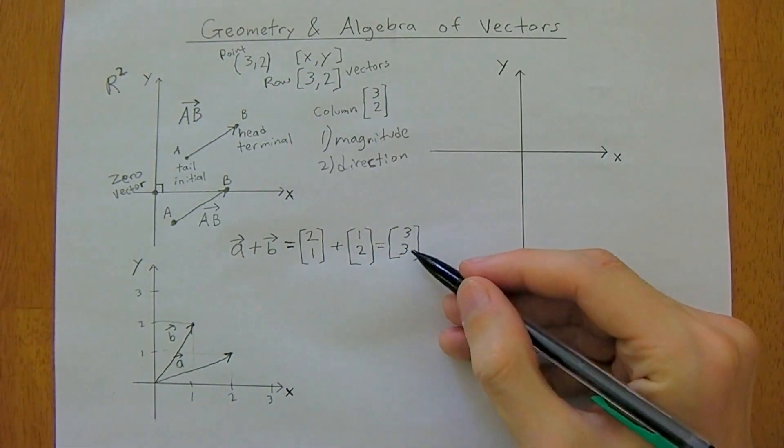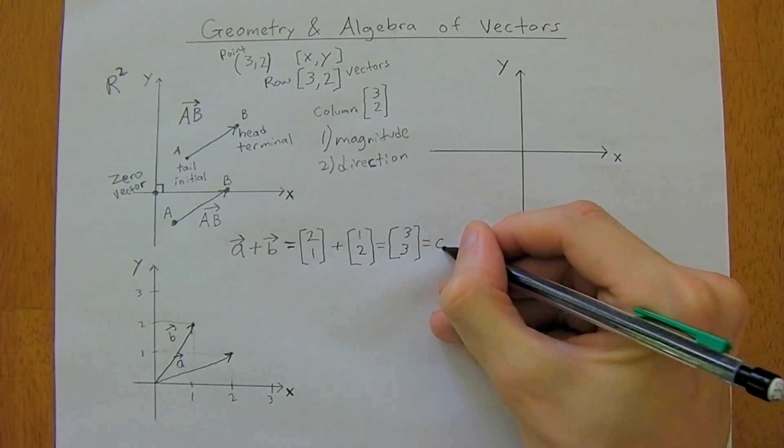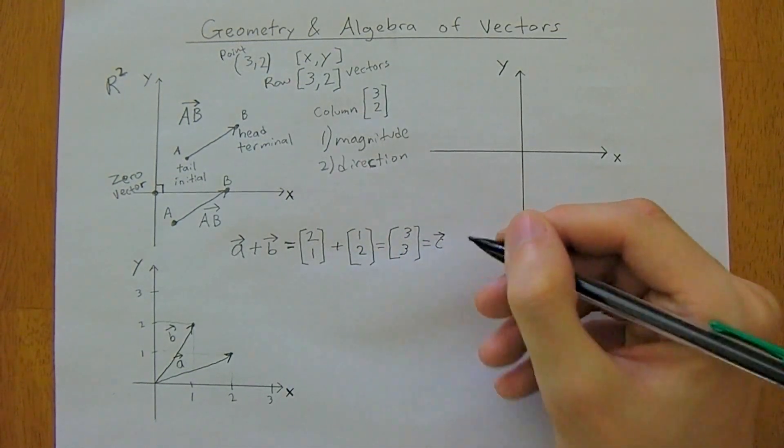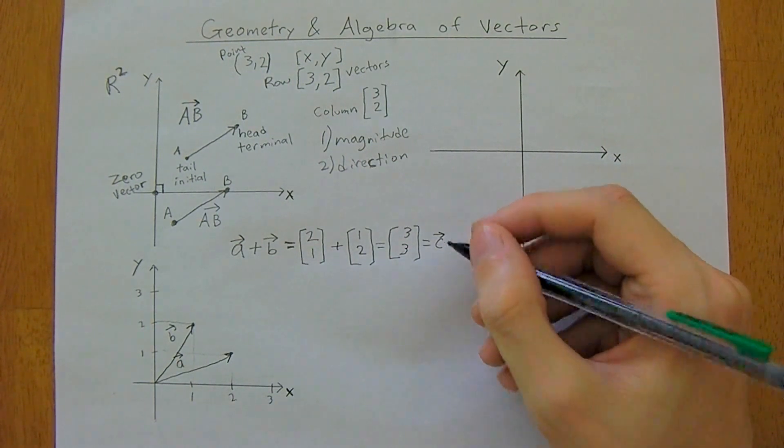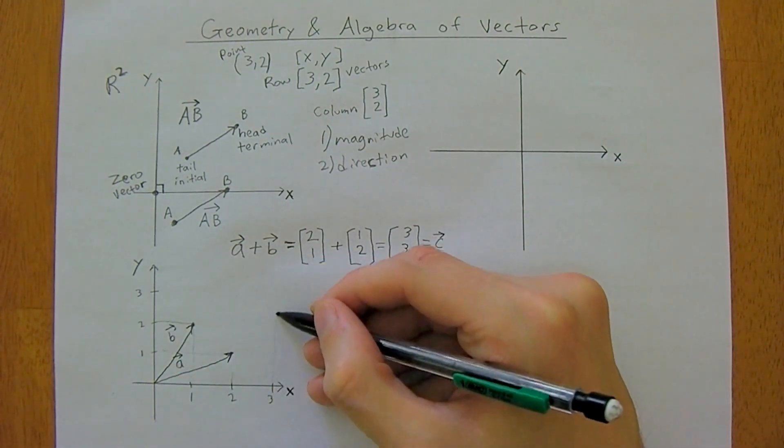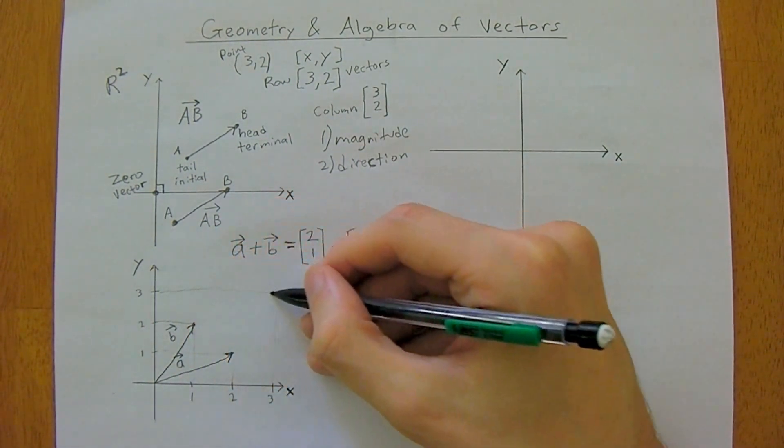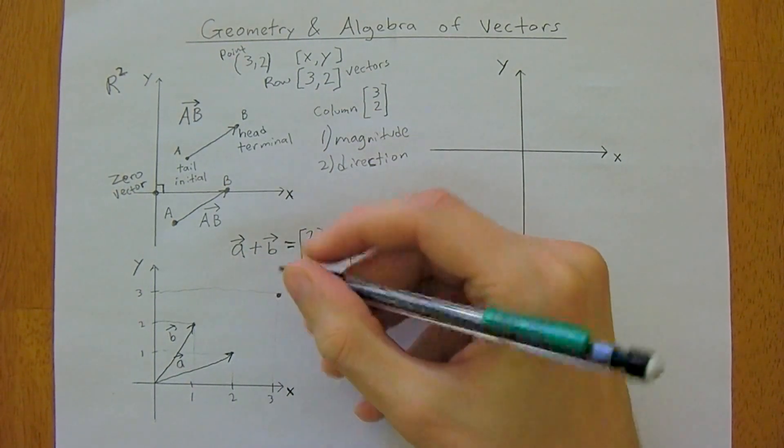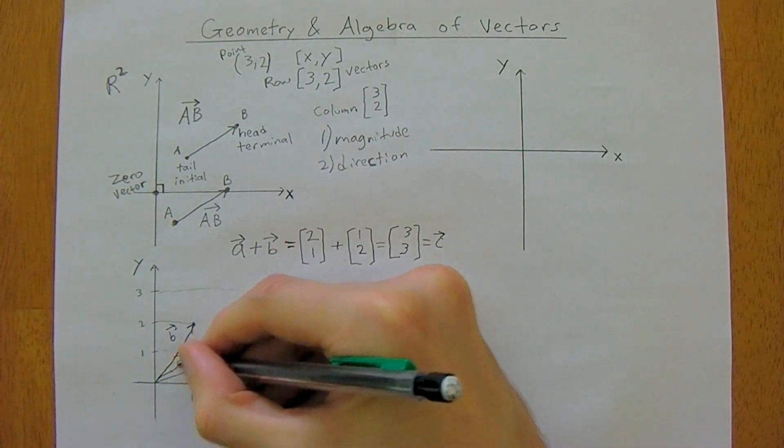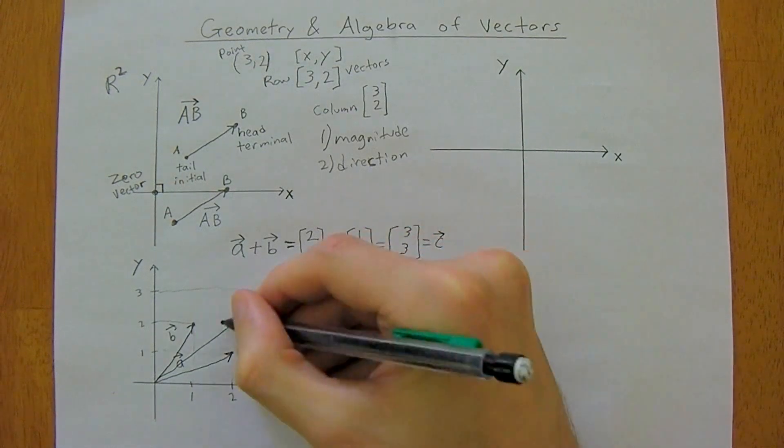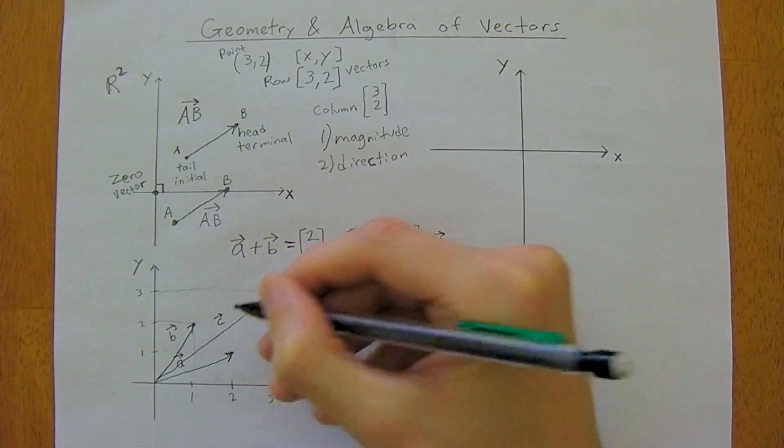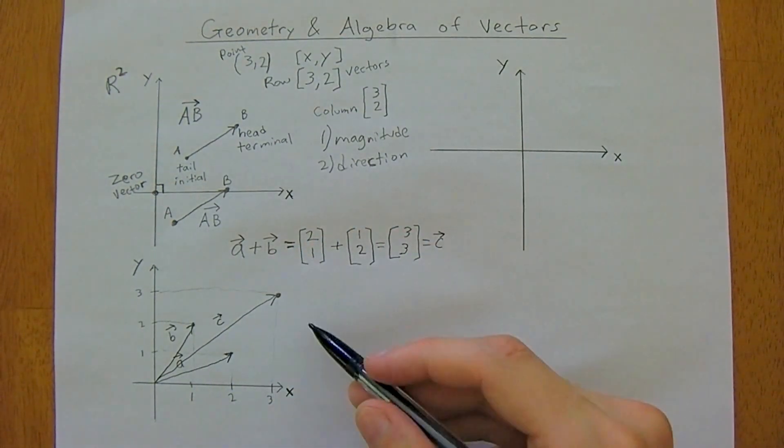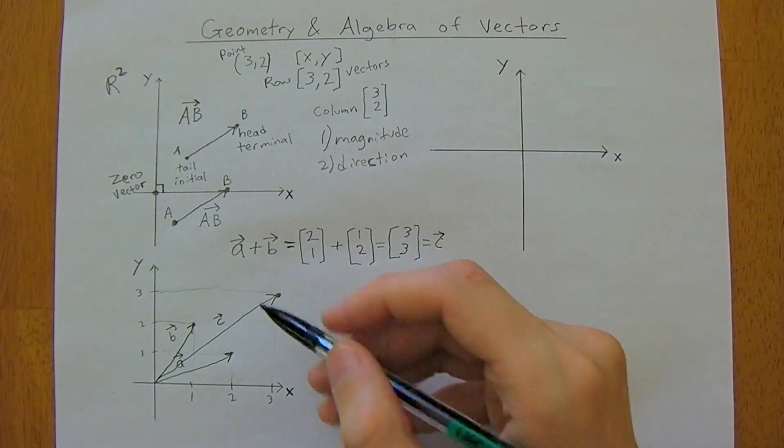So a plus b, we'll just label it vector c now, just to denote it as a unique vector. It's going to go over 3 and up 3, and it'll end up over here, something like this.